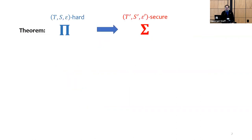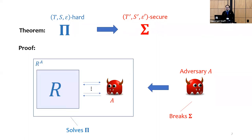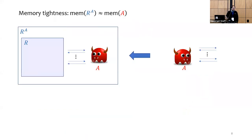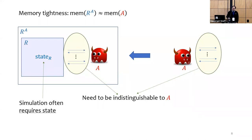When we prove that hardness of some problem π implies a scheme is secure, what we are really doing is showing that given an adversary A that breaks the security of scheme σ, we can transform it into an algorithm R(A) which can solve problem π. If the memory of R(A) is close to the memory of A, then the reduction R is memory tight. The main task R needs to accomplish is to simulate the challenger for the security game of σ to A in a way that is indistinguishable to A. To do this, R often needs to store state, and for the reduction to be memory tight, this state needs to be small.